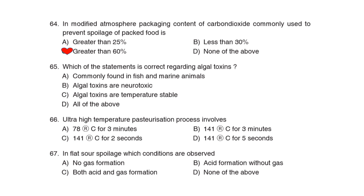65th Question: Which of the statements is correct regarding algal toxin? Correct Answer: Option D: All of the above. 66th Question: Ultra high temperature pasteurization process involves Correct Answer: Option C: 141 degrees Celsius for 2 seconds. 67th Question: In flat sour spoilage, which conditions are observed? Correct Answer: Option B: Acid formation without gas.